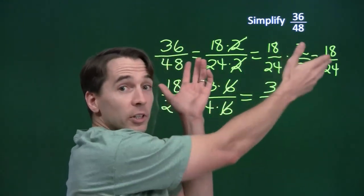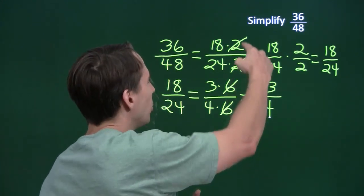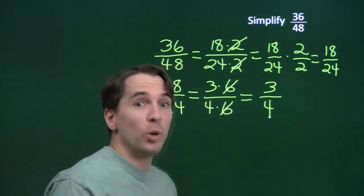So it's perfectly fine to simplify in two steps. Oh, you're right. Yeah, we could have done this in one step. We canceled a 2, and then we canceled a 6. We could have done that all in one step.